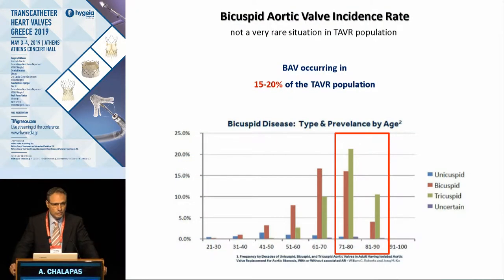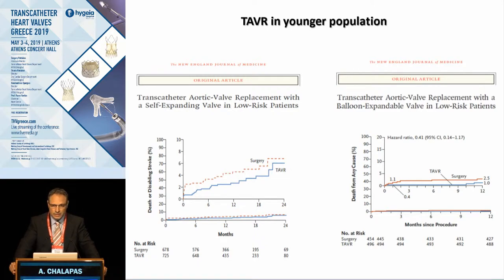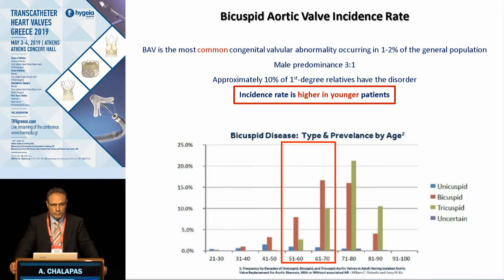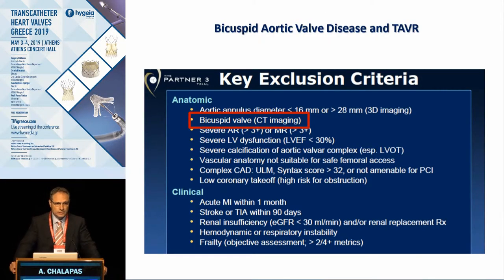And why is that? Because the bicuspid valve is characterized by anatomical and morphological heterogeneity, and at the same time there are several important issues. What we know is that the bicuspid valve is not a rare situation in the TAVR population — it occurs in up to 20% of cases. And according to recently published data regarding both self-expandable and balloon-expandable valves, we expect that TAVR will expand into younger populations as well, and this group is characterized by a higher incidence of bicuspid valves. However, there is a big limitation regarding this group since there are no solid data, due to the fact that bicuspid valves were an exclusion criterion in most clinical trials.